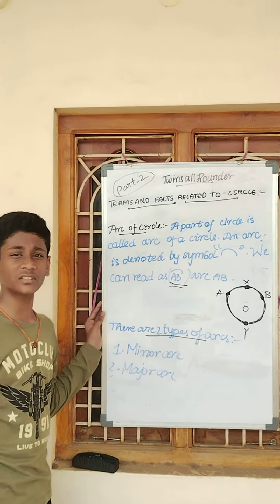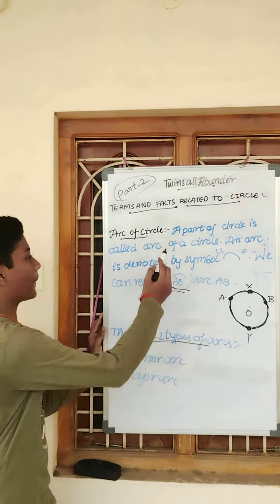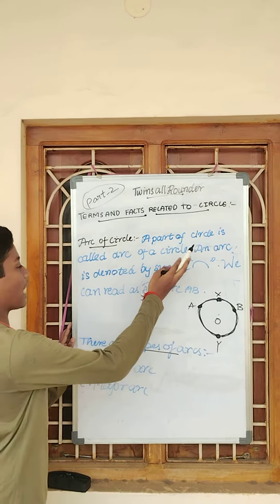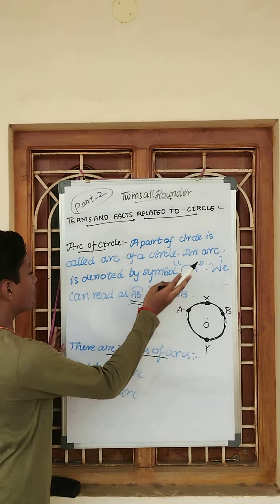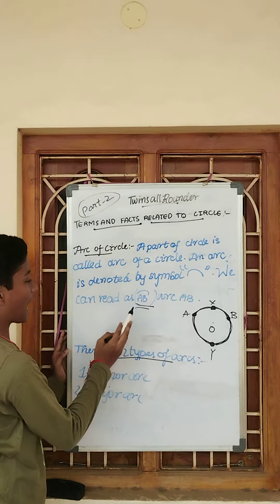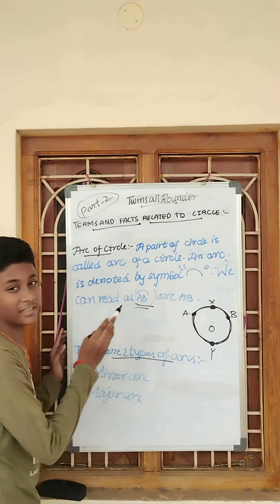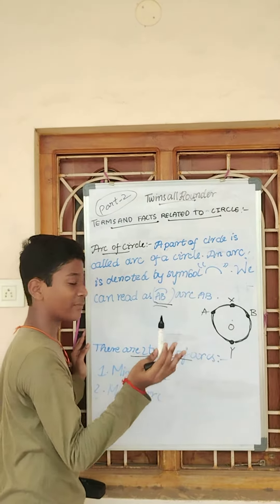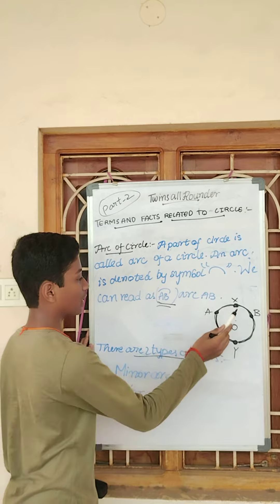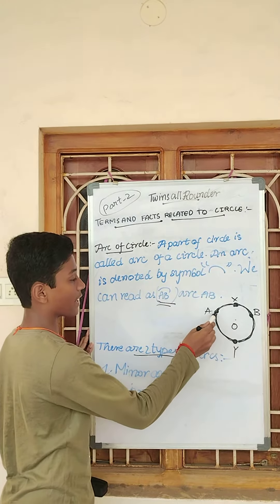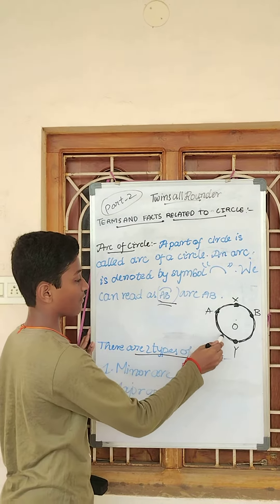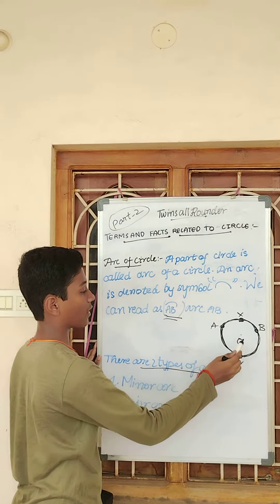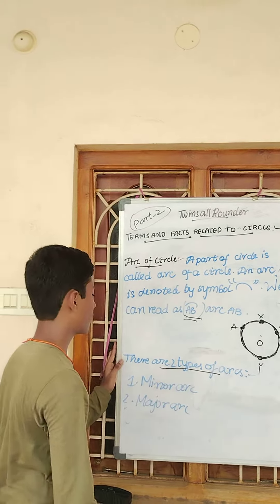Arc of the circle. What is arc of the circle? A part of the circle is called arc of the circle. An arc is denoted by the symbol arc. We can read it as arc AD, as you can see here. In this image, there are 4 arcs: XAR, AYR, YBR, and BXR, where O is the center.